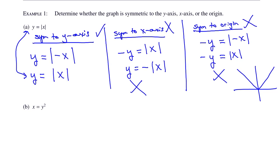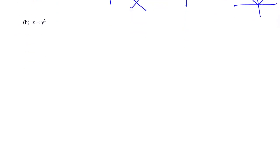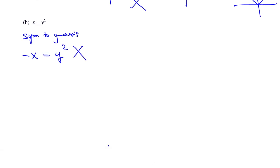Let's take a look at part b: x equals y squared. Check for symmetry to the y-axis by substituting negative x for x. You get negative x equals y squared. There's no way that could equal the original, so it is not symmetric to the y-axis.